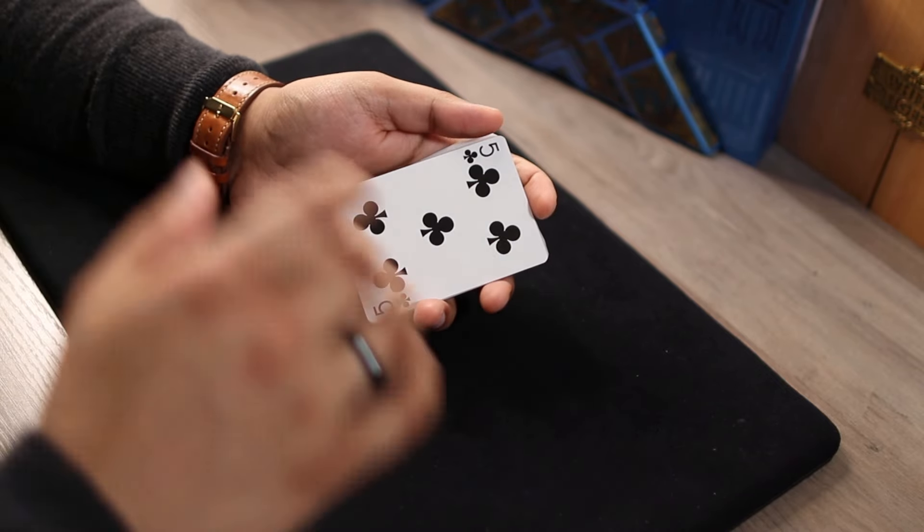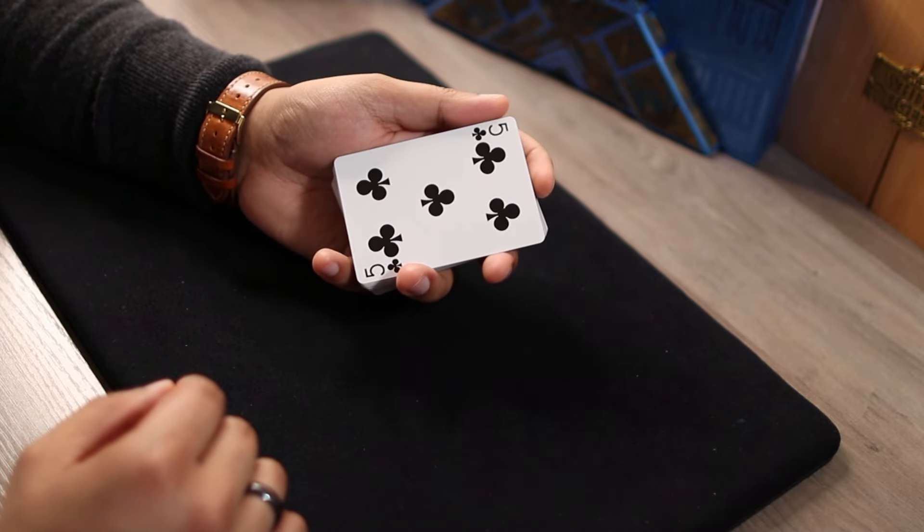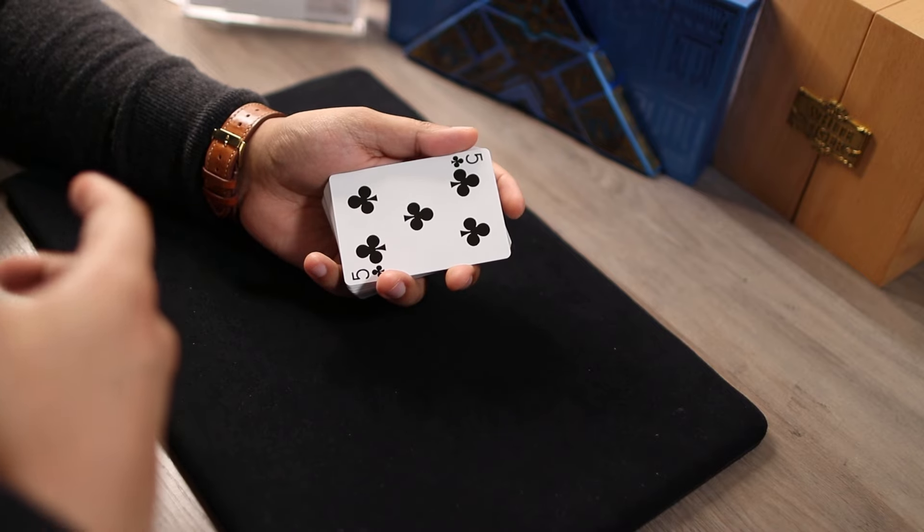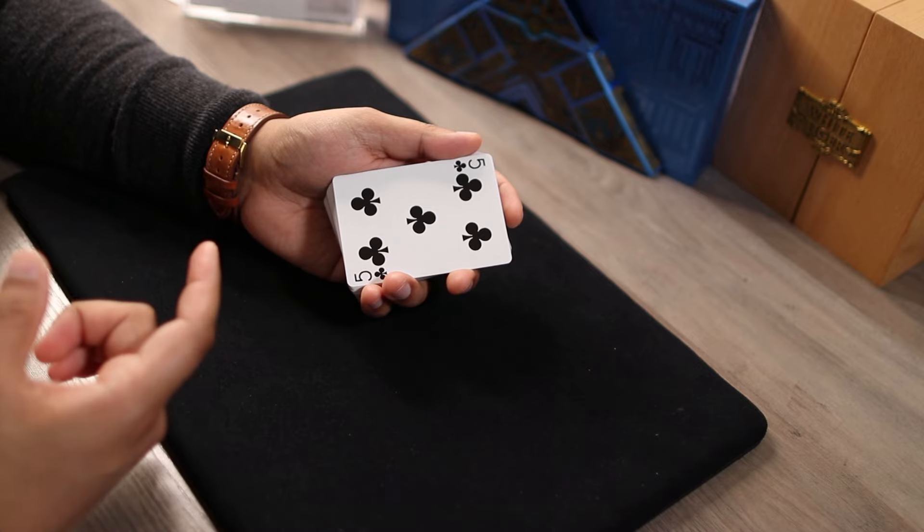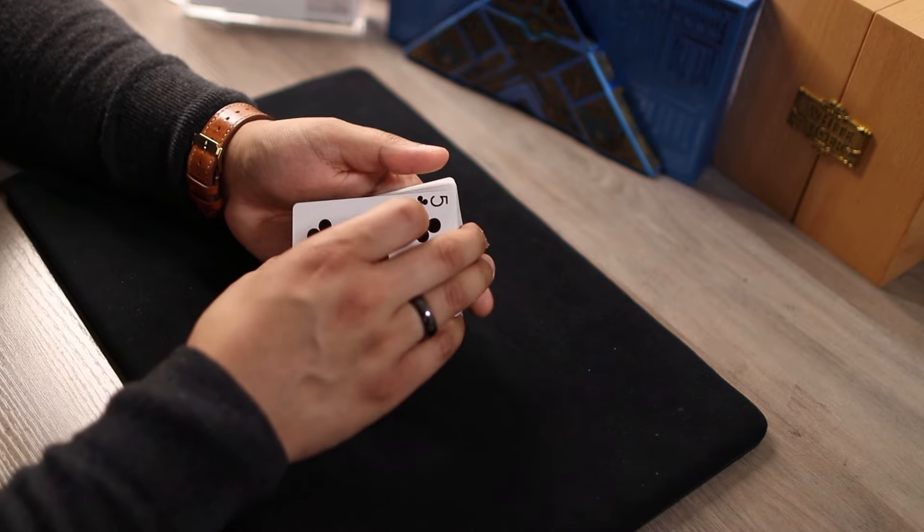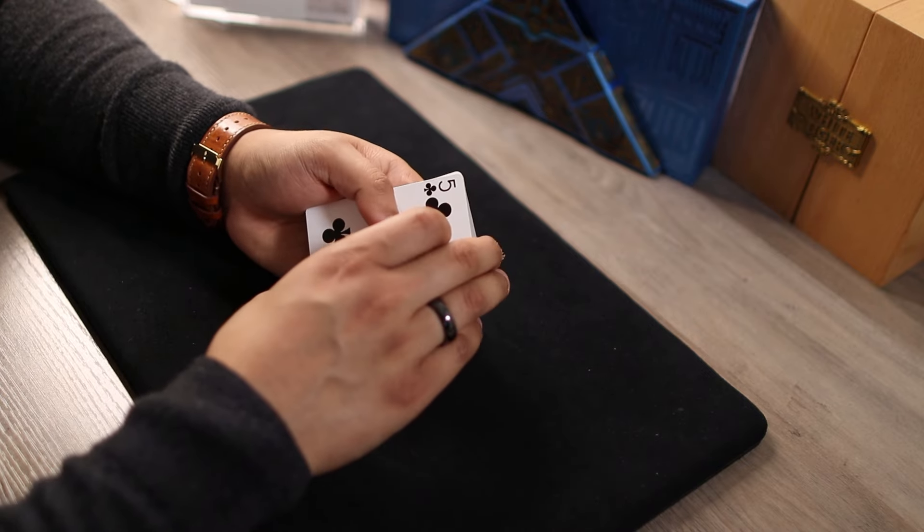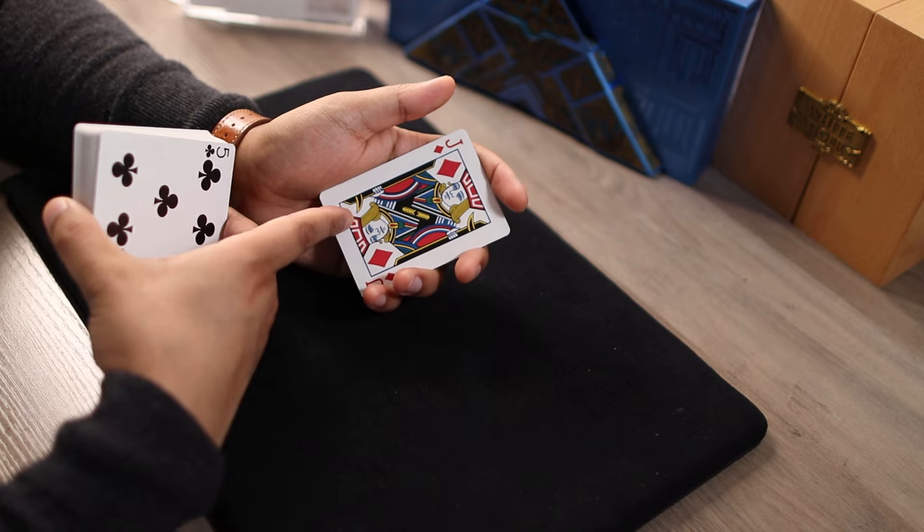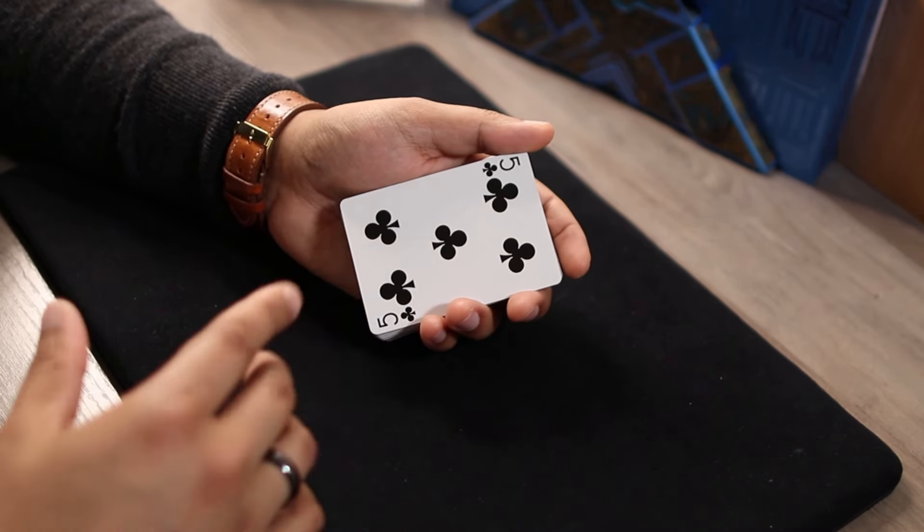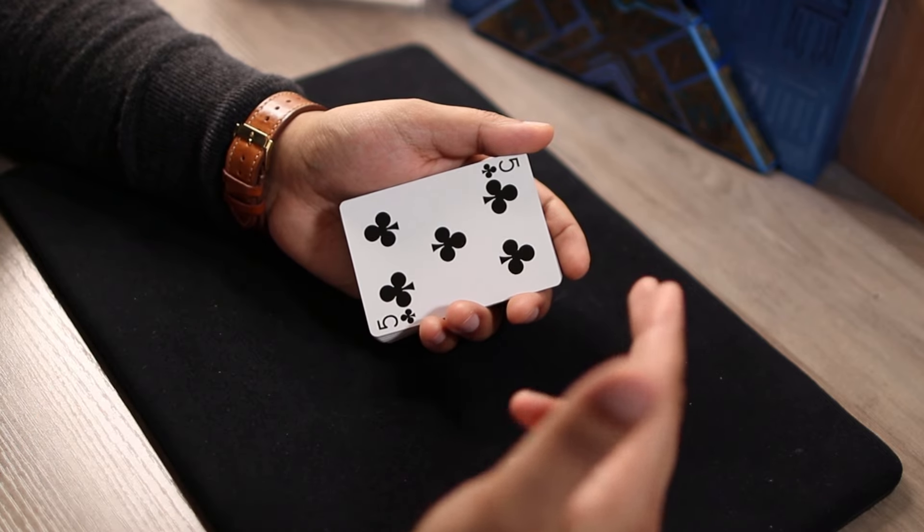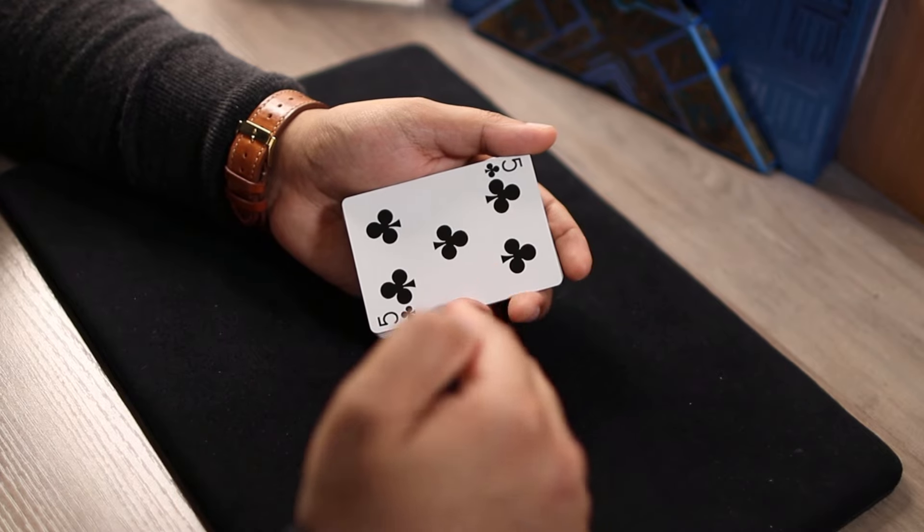This is where the more technical stuff kind of feeds right in. The move we're going to be doing is the Halo Cut. So what the Halo Cut does is it gives the deck a cut while keeping a card in place, either the top or bottom card in place. So for example here, we have the Jack of Diamonds on top, and we want to give this deck a cut, but retain that Jack of Diamonds on top of the deck.